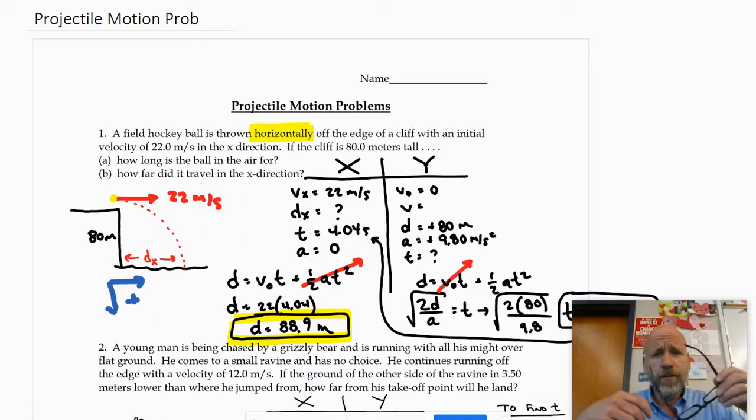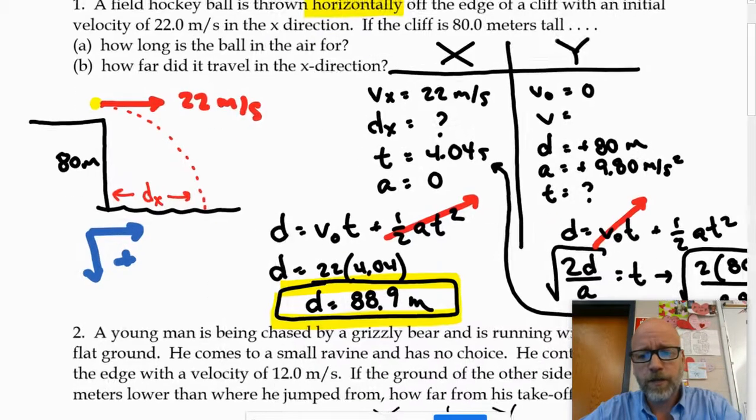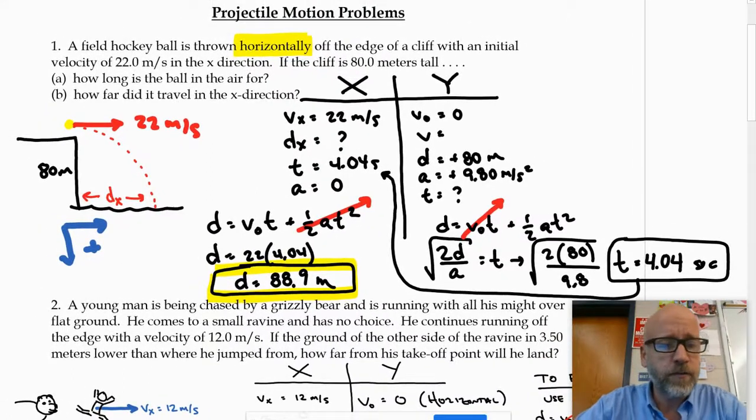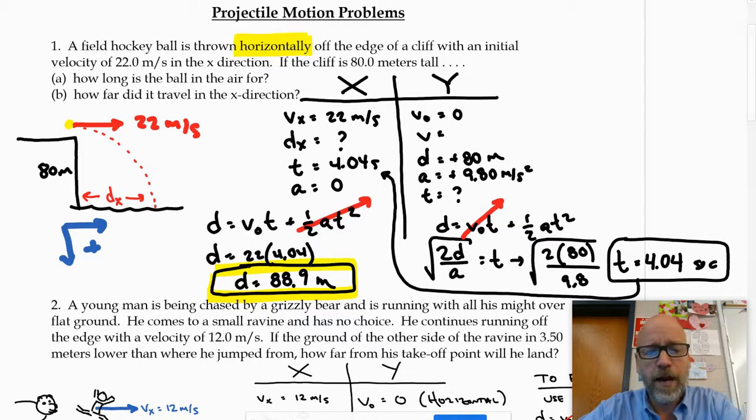When I look at the first problem, the first thing I made sure I did was I drew a picture and I decided to make down and right positive. When I pull the information out, I saw that because it was traveling horizontally...